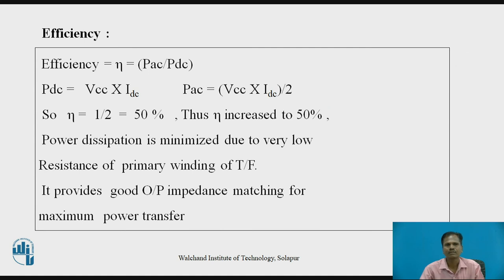The efficiency of the transformer-coupled class A power amplifier is η = PAC / PDC, where PDC = VCC × IDC. PAC = VCC × IDC / 2. Therefore, for the transformer-coupled class A power amplifier, η equals 1/2, that is 50 percent. Thus, the efficiency is increased from 25 percent to 50 percent compared to the series-fed type. Power dissipation is minimized due to the very low resistance of the primary winding of the transformer, and with the use of the transformer, impedance matching for maximum power transfer is very good.